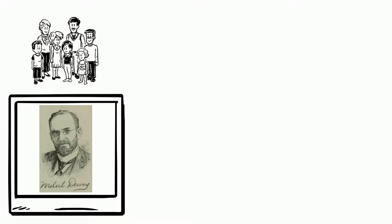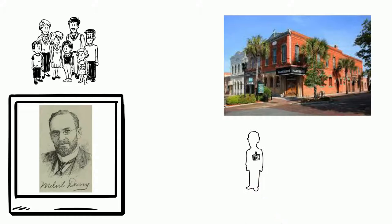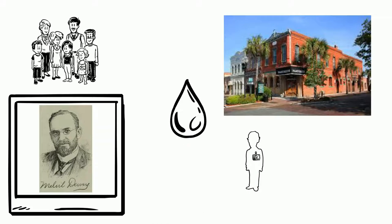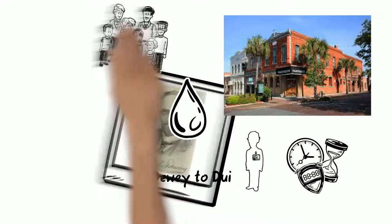Melville was born to a poor family who lived in a small town in Upper New York State. Keenly interested in simplifying his life, he shortened his first name, dropped all his middle names, and even for a short time spelled Dewey as D-U-I.